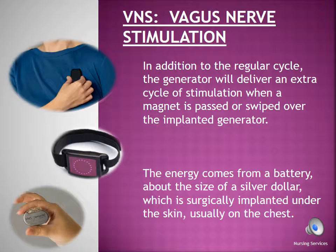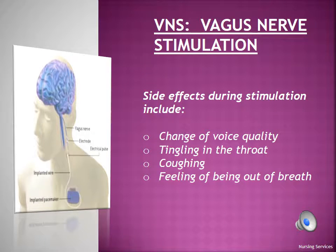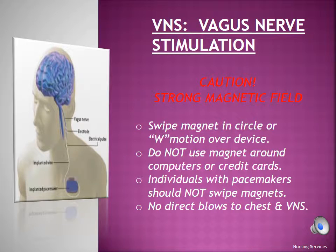These magnets come in different strengths and styles and may be worn on the person's wrist. When the vagal nerve stimulator is activated by swiping the magnet, the person may experience a brief change in voice quality, tingling in the throat, the urge to cough, or a feeling of being out of breath. To use a VNS magnet, simply swipe the magnet over the VNS in a circular motion or in a W pattern. Do not hold the magnet motionless over the VNS for more than 1 to 2 seconds, as this will deactivate the VNS altogether.